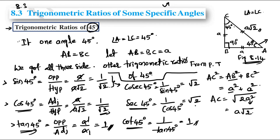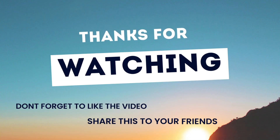So the values are: sin 45° = 1/√2, cos 45° = 1/√2, tan 45° = 1, cosec 45° = √2, sec 45° = √2, and cot 45° = 1. These are the trigonometric ratios of 45 degrees — very important. Please practice so you can apply these values in problems easily.